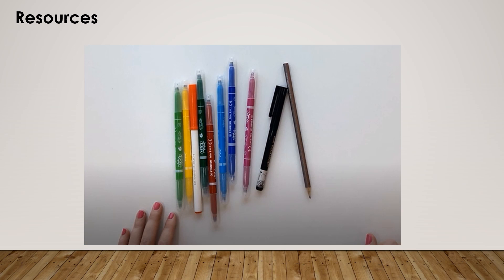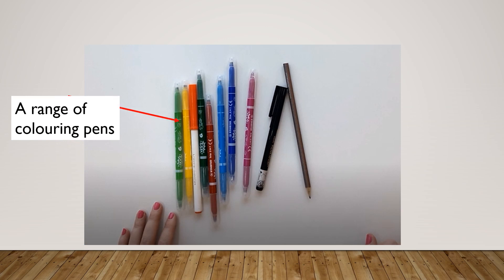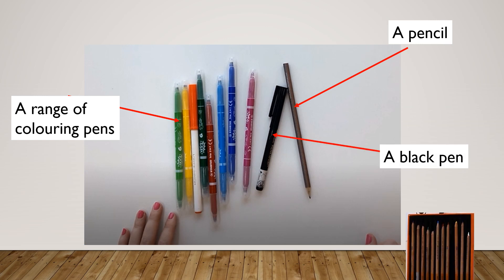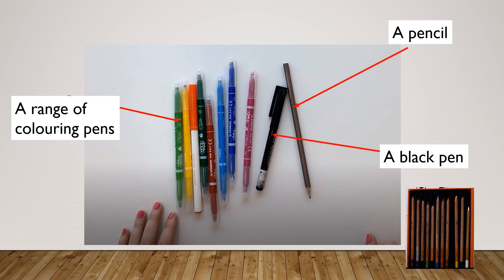So let's take a look at the resources that you will be using today. You need a range of coloring pens, a pencil, and a black pen to outline. You can also use coloring pencils if you have them. If you don't have the resources that I use at home, you can use any art resources that you have. Let's now take a look at the video and see how you can create your monster of colors today.